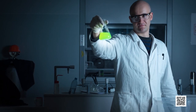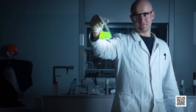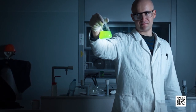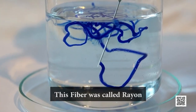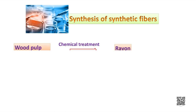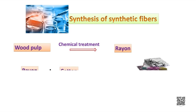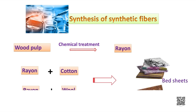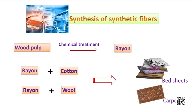Scientists are always interested in making natural sources in the laboratory. They were successful in making silk artificially — this fiber was called rayon. It was obtained by chemical treatment of wood pulp. Rayon has properties similar to that of silk. Nowadays, many clothes are made up of rayon and it is cheap compared to silk clothes.